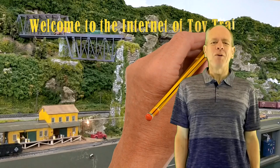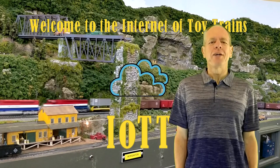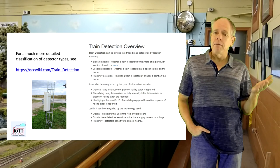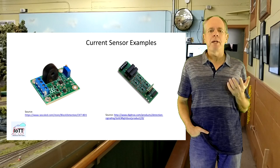Hello YouTubers and welcome to the Internet of Toy Trains. I am Hans Tanner and here is a new episode of IoTT with fresh ideas about how to use IoT components to control a model railroad layout. Let's get started. When it comes to block detection, it seems there are two prevailing technologies: level sensors and momentary detectors.